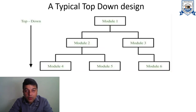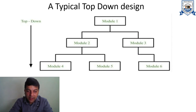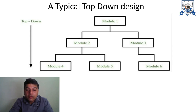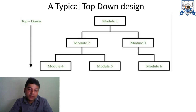This is how a typical top-down design looks like. We have Module 1 which is the top module, integrated with all the sub-modules in the hierarchy. Modules 4, 5, and 6 are the lowest level of modules in the hierarchy, and from top to down we move in order to refine our functionality. Modules 4, 5, and 6 are the modules from which we get no further modules because we have refined them to the maximum possible level.